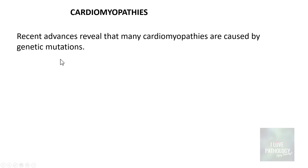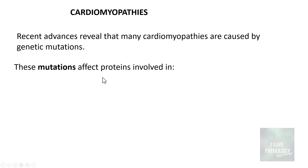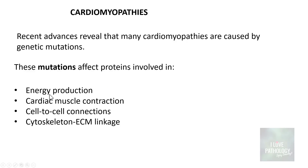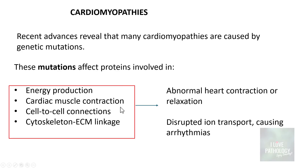What are these genetic mutations? The mutations involve myocardial proteins which are involved either in energy production of the myocardium, cardiac muscle contraction, cell-to-cell connections, or cytoskeleton and extracellular matrix linkage. Any of these proteins can be mutated leading to cardiomyopathies. All these mutations lead to abnormal heart contraction or relaxation and disrupted ion transport, which causes cardiac arrhythmias.